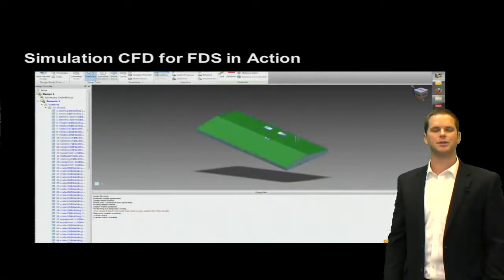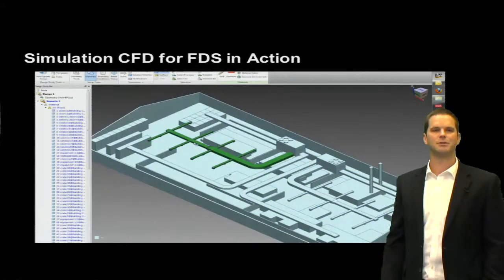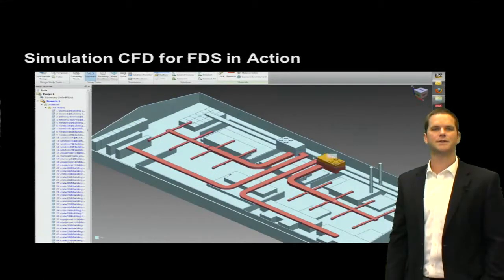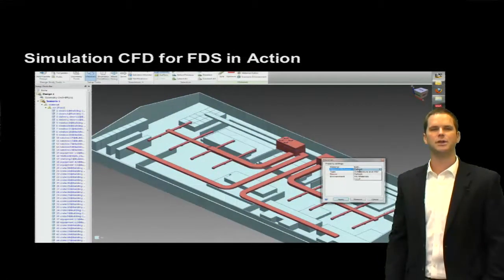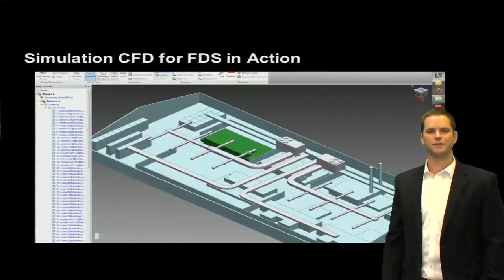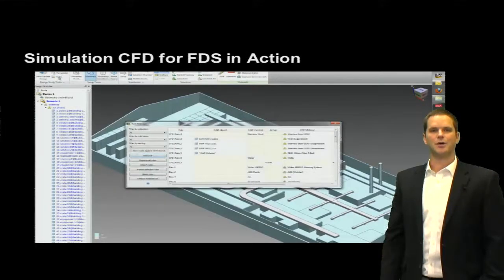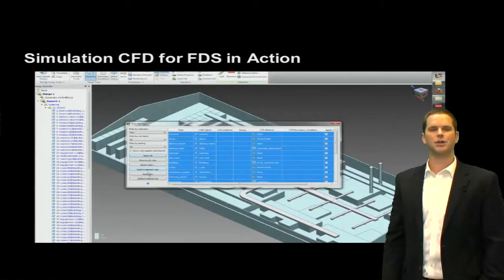Now we're reading it into Simulation CFD. We'll do a few things to clean up a couple edges and surfaces here and there — that happens automatically. Now we start assigning materials. We've selected the ducts and we're going to assign those as aluminum or steel, whatever the material may be. We can also set up rules to automate this process next time. We have a full database of materials right at your fingertips, and you can even set favorites and preferences within that.